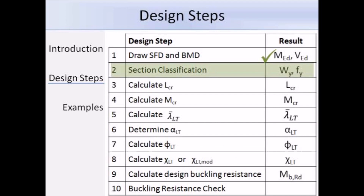Step 2 is asking us to classify the section, and the results we need are the appropriate values of W_Y and F_Y. I've already gone through cross-section classification in the cross-section classification lecture, so hopefully you'll be familiar with that. To refresh your memory, there is a summary table on the next slide.